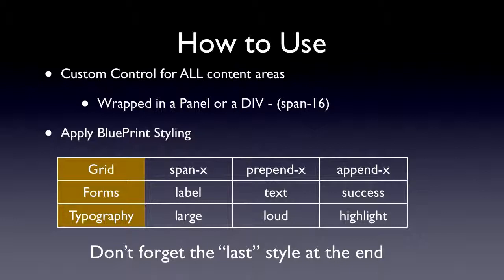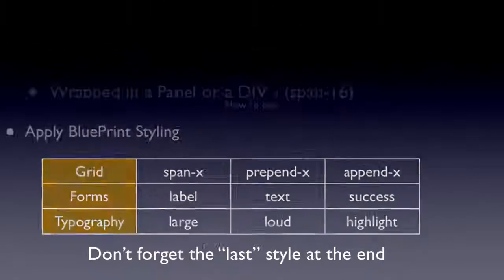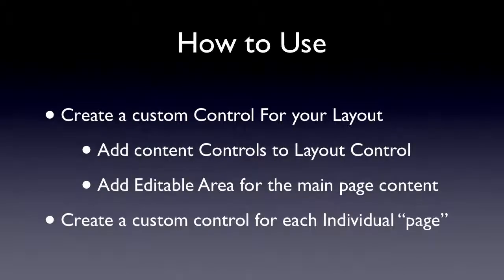If you look at this grid — span-X, prepend, append — you can use columns in Blueprint, so span-16 for instance, and that's how you move it on the screen. The forms and typography have different stylings as well inside Blueprint. Very importantly, the last style you need on one of your custom control containers is the 'last' style, and what that says is anything that comes next goes underneath it. So it's kind of easy to work with.